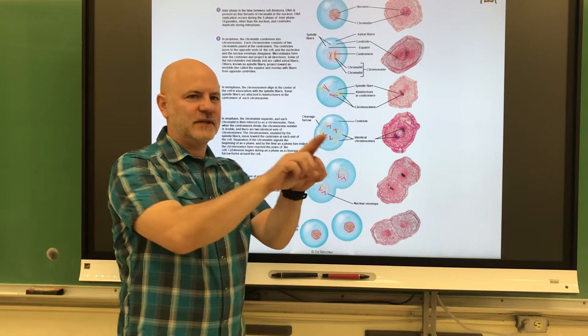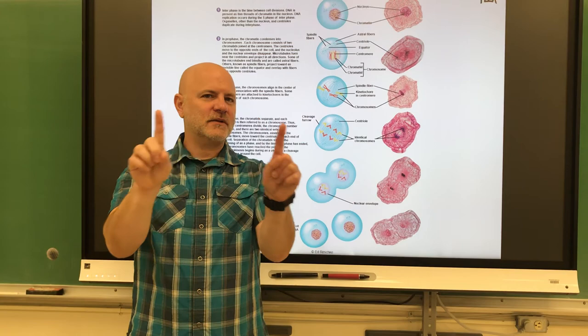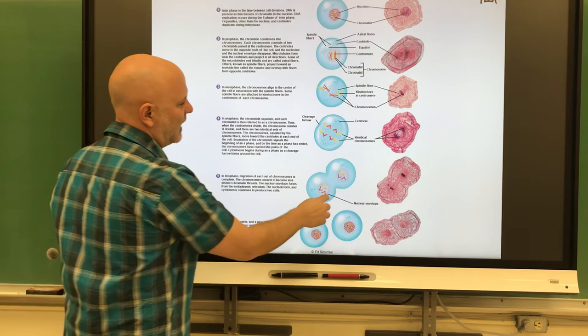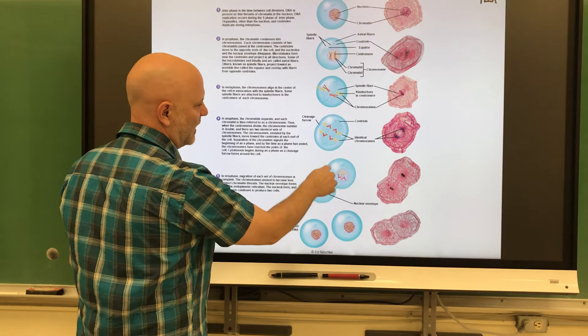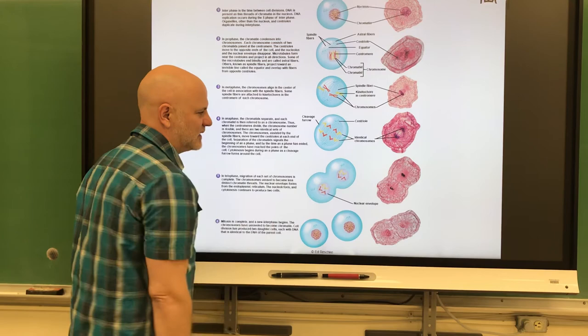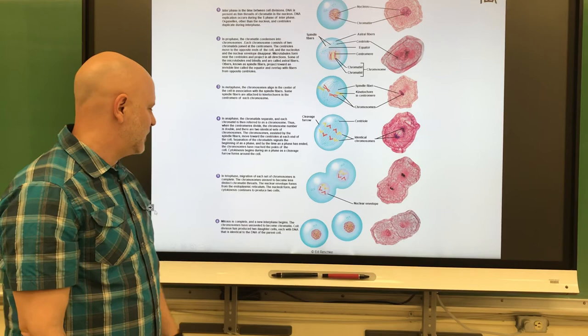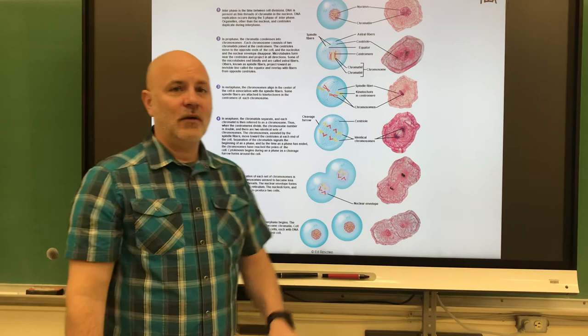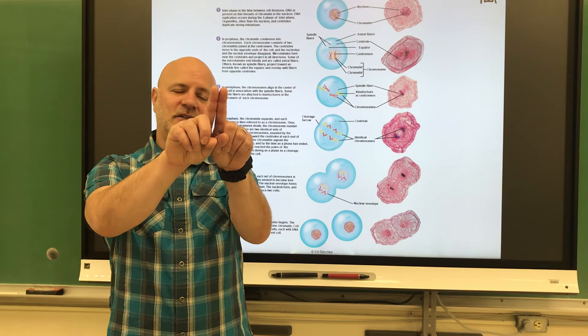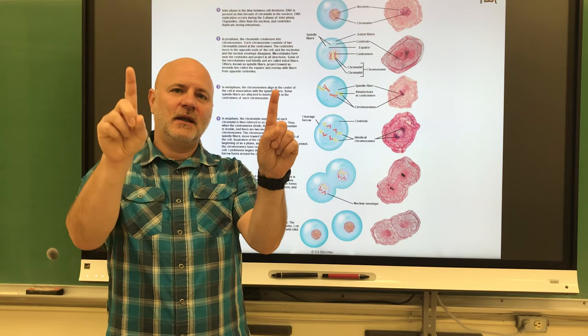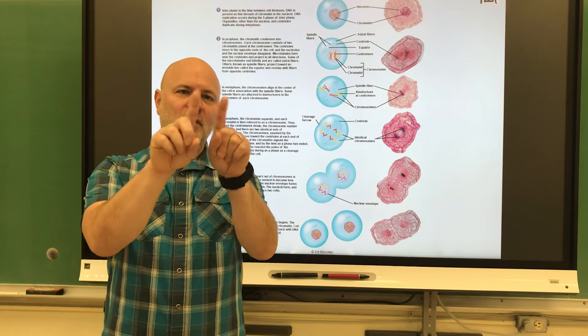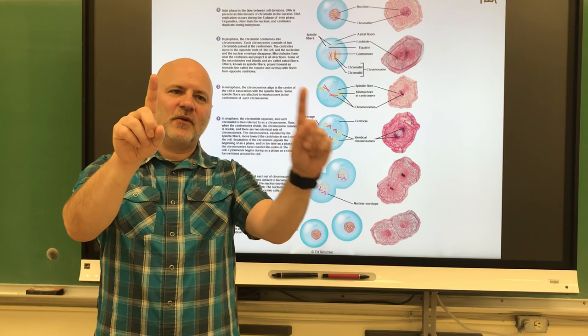In anaphase, the sister chromatids are separated from each other — they are now called daughter chromosomes — and they move to opposite ends of the cell. In telophase, those chromosomes have completed their movement, the spindle fibers disappear, and new nuclear envelopes form around them. Cytokinesis is nearly complete, pinching the cell into two cells. We end up with daughter cells back in interphase. So we start with 46 chromosomes, they get duplicated, separated, and we get 46 in one cell and 46 in the other.